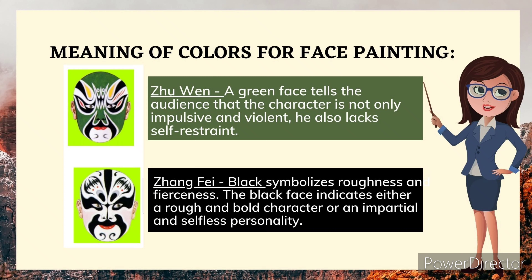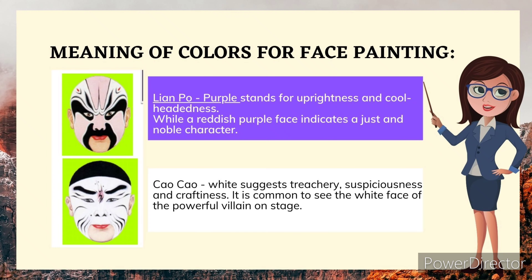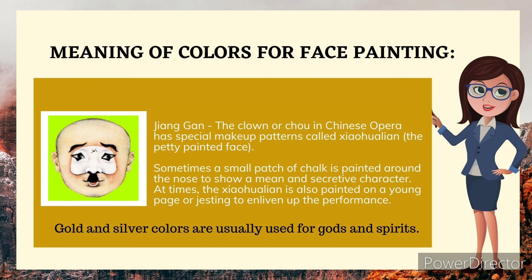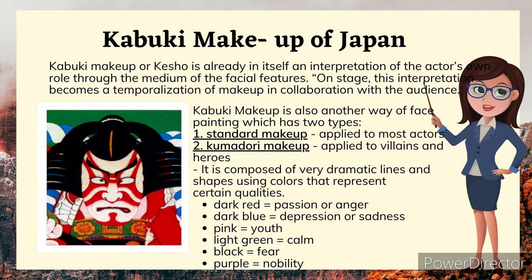Zhang Fei — black symbolizes roughness and fierceness; the black face indicates either a rough and bold character or an impartial and selfless personality. Lian Po — purple stands for uprightness and cool-headedness, while a reddish purple face indicates a just and noble character. Cao Cao — white suggests treachery, suspiciousness, and craftiness; it is common to see the white face of the powerful villain on stage. Zhang Gan — the clown, or Zhou in Chinese opera, has special makeup patterns called Ziyahualian, the petty painted face. Sometimes a small patch of chalk is painted around the nose to show a mean and secretive character.